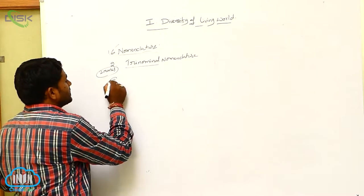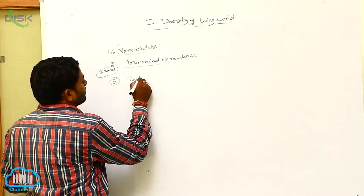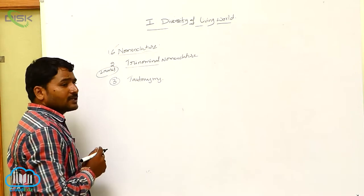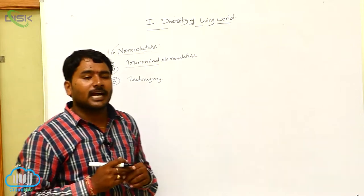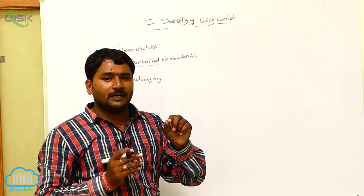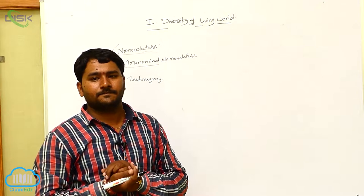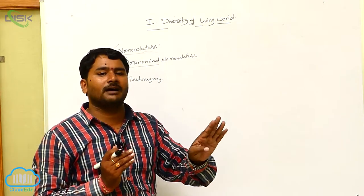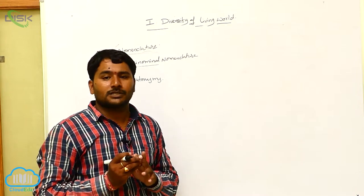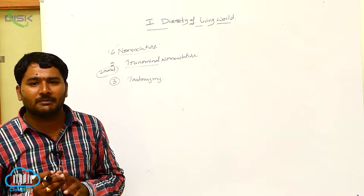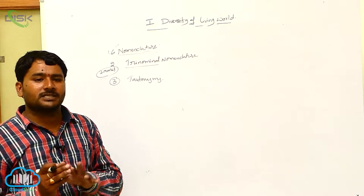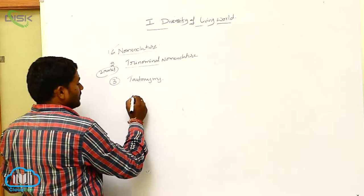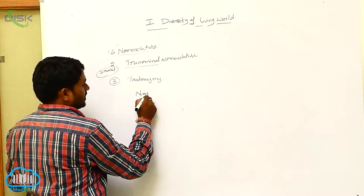The third topic is tautonymy. Tautonymy is the practice of naming an animal in which both the genus name and the species name are the same. For example, Naja naja.